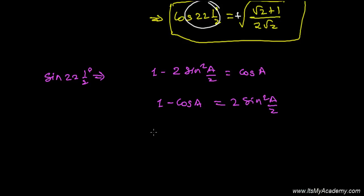So we can say that (1 minus cosine A) divided by 2 equals sine squared A/2. And the square root of (1 minus cos A)/2 equals sine A/2.